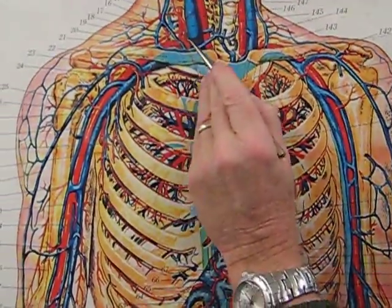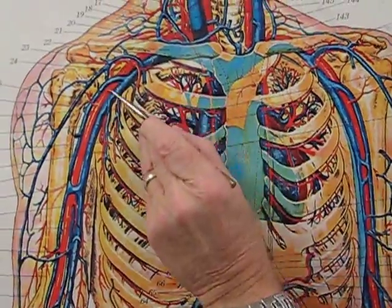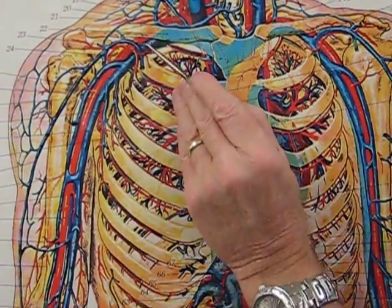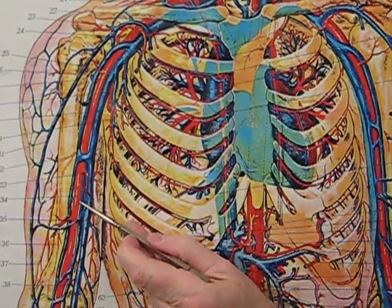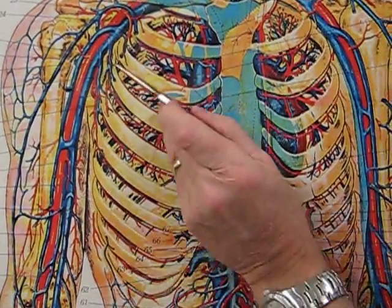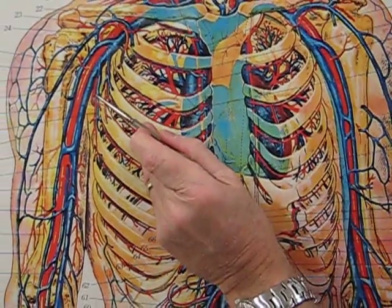Coming back to the subclavian, once it emerges into the axilla, it's the axillary artery. The axillary artery comes out and essentially bifurcates into the brachial, which comes down along the humerus, and the subscapular, which goes to the anterior part of the scapula.